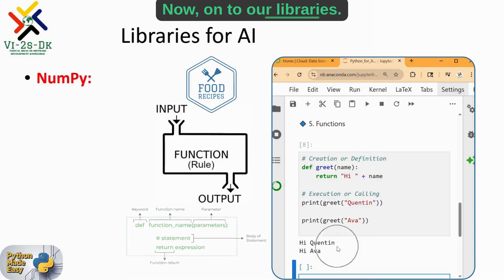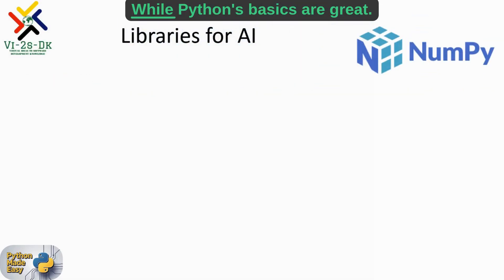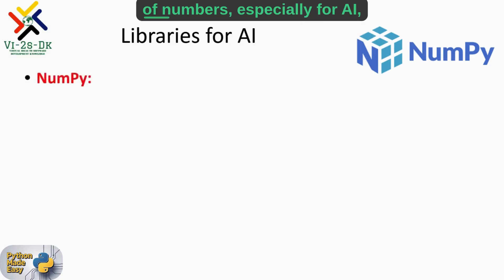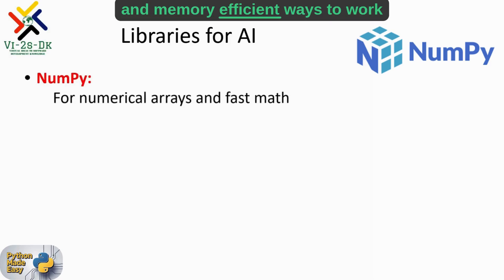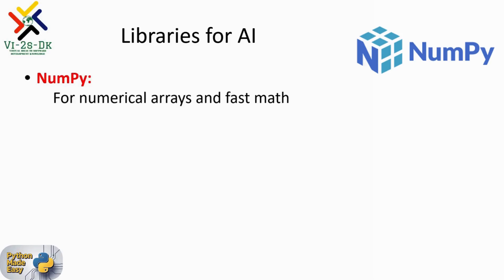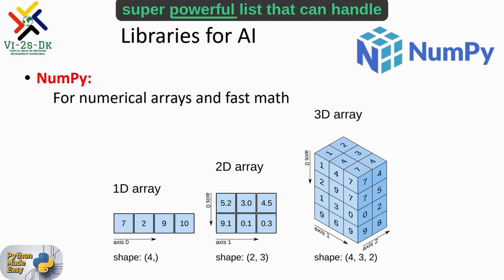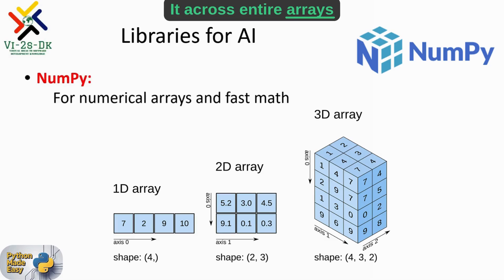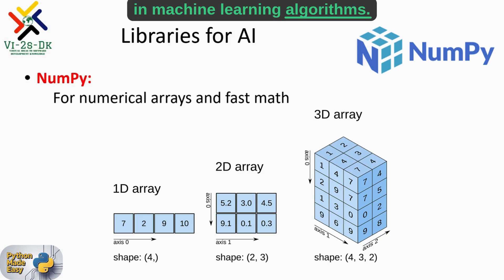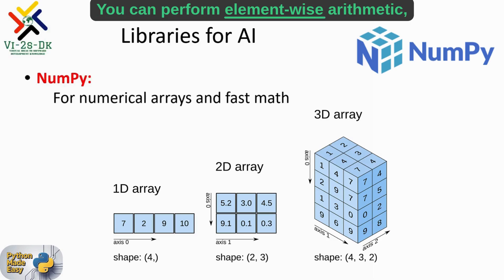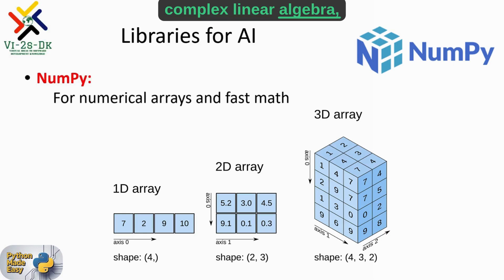Now, onto our libraries. Let's start with NumPy. While Python's basics are great, when it comes to the heavy lifting of numbers — especially for AI — we rely on NumPy. NumPy provides incredibly fast and memory-efficient ways to work with large arrays and matrices. Its core object, the ndarray, is an n-dimensional array. Think of it like a super-powerful list that can handle mathematical operations across entire arrays with lightning speed. This is crucial for the complex calculations in machine learning algorithms. You can perform element-wise arithmetic, complex linear algebra, and more at a highly optimized speed.